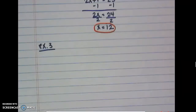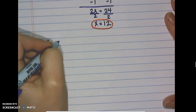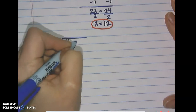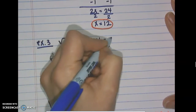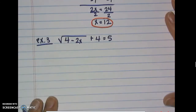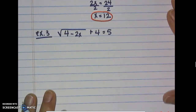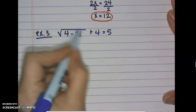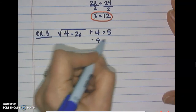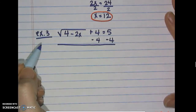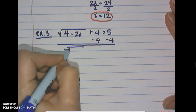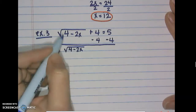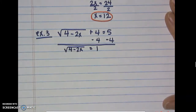Next: the square root of 4 minus 2x plus 4 equals 5. If you feel like you understand this, pause the video and try it on your own. We need to get the square root by itself — it doesn't have to be a square root, the same applies to any radical — so we subtract 4 from both sides: the square root of 4 minus 2x equals 1.